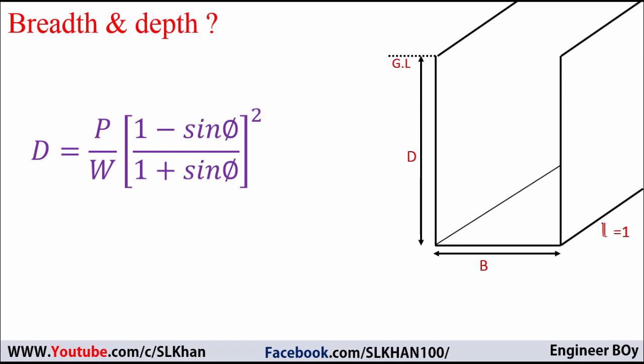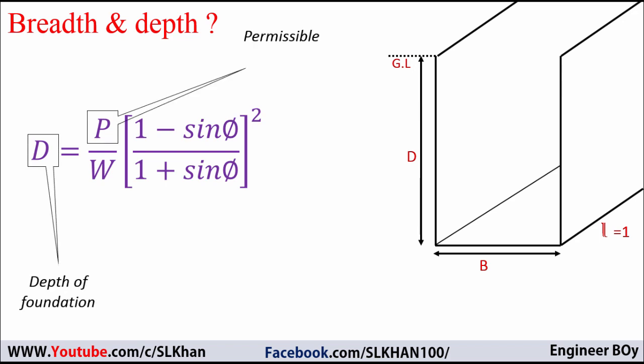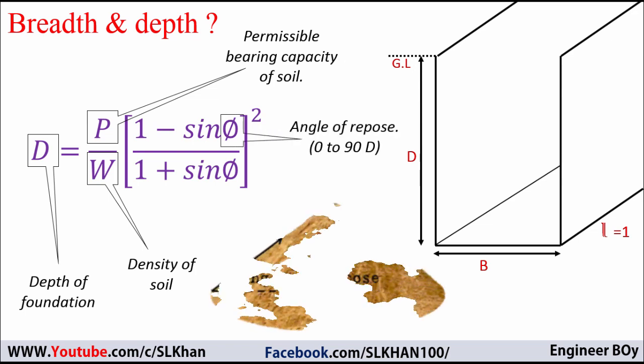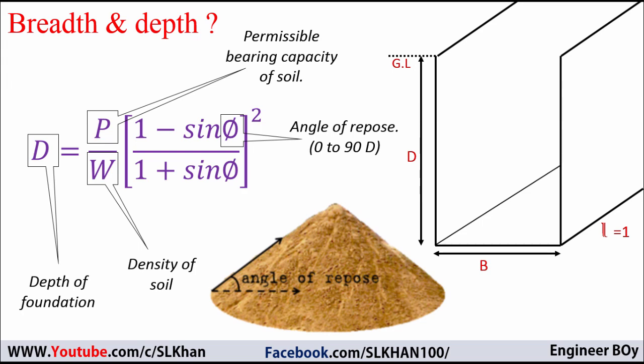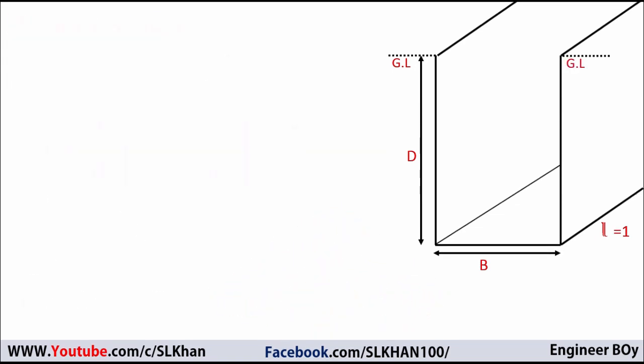In the depth formula, D is the depth of foundation, P is the permissible bearing capacity, W is the density of soil or unit weight of the soil, and sine of theta is a trigonometric ratio where theta is the angle of repose, which can range from 0 to 90 degrees. The angle of repose is the natural gradient or natural slope — when you drop a soil mass freely from some height, it will form a slope, and that slope angle is theta.